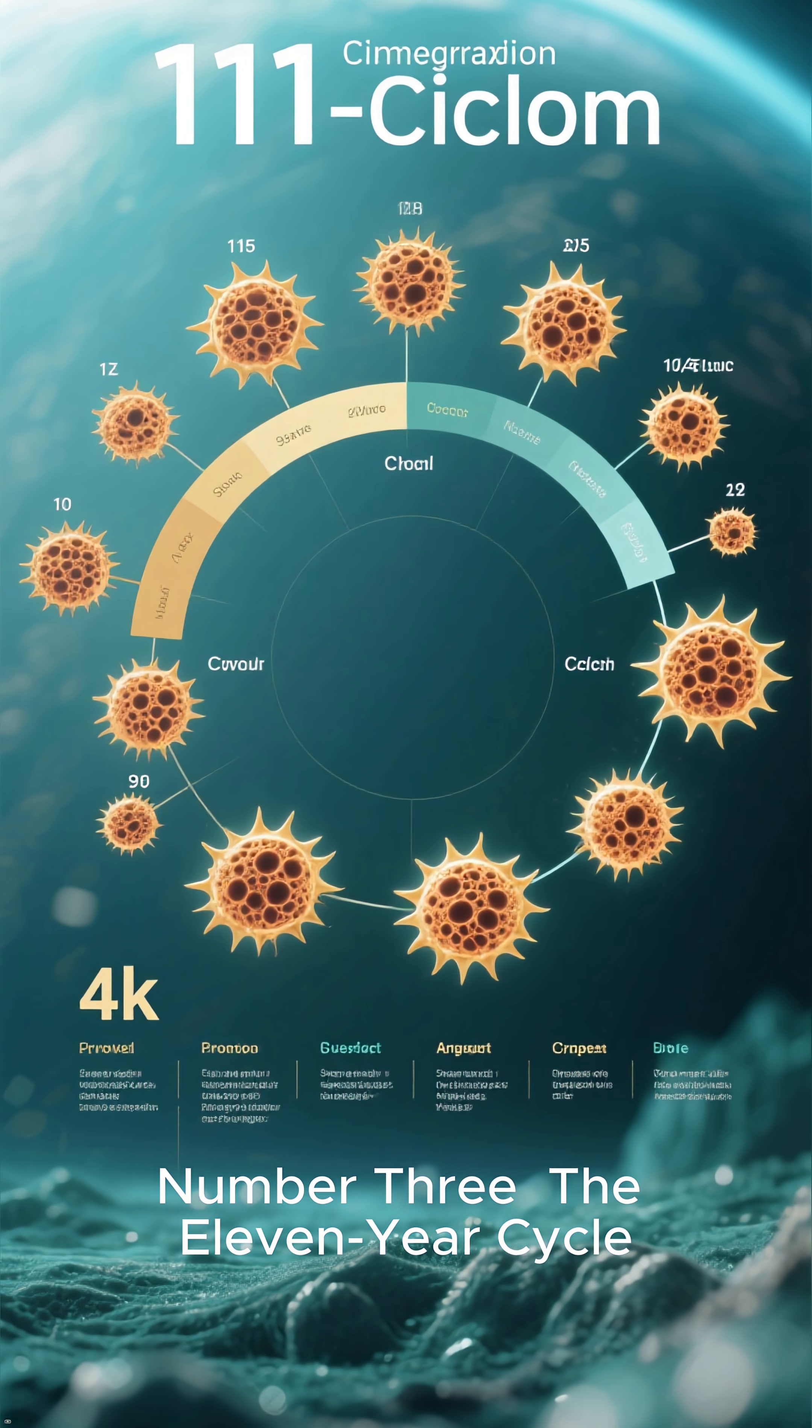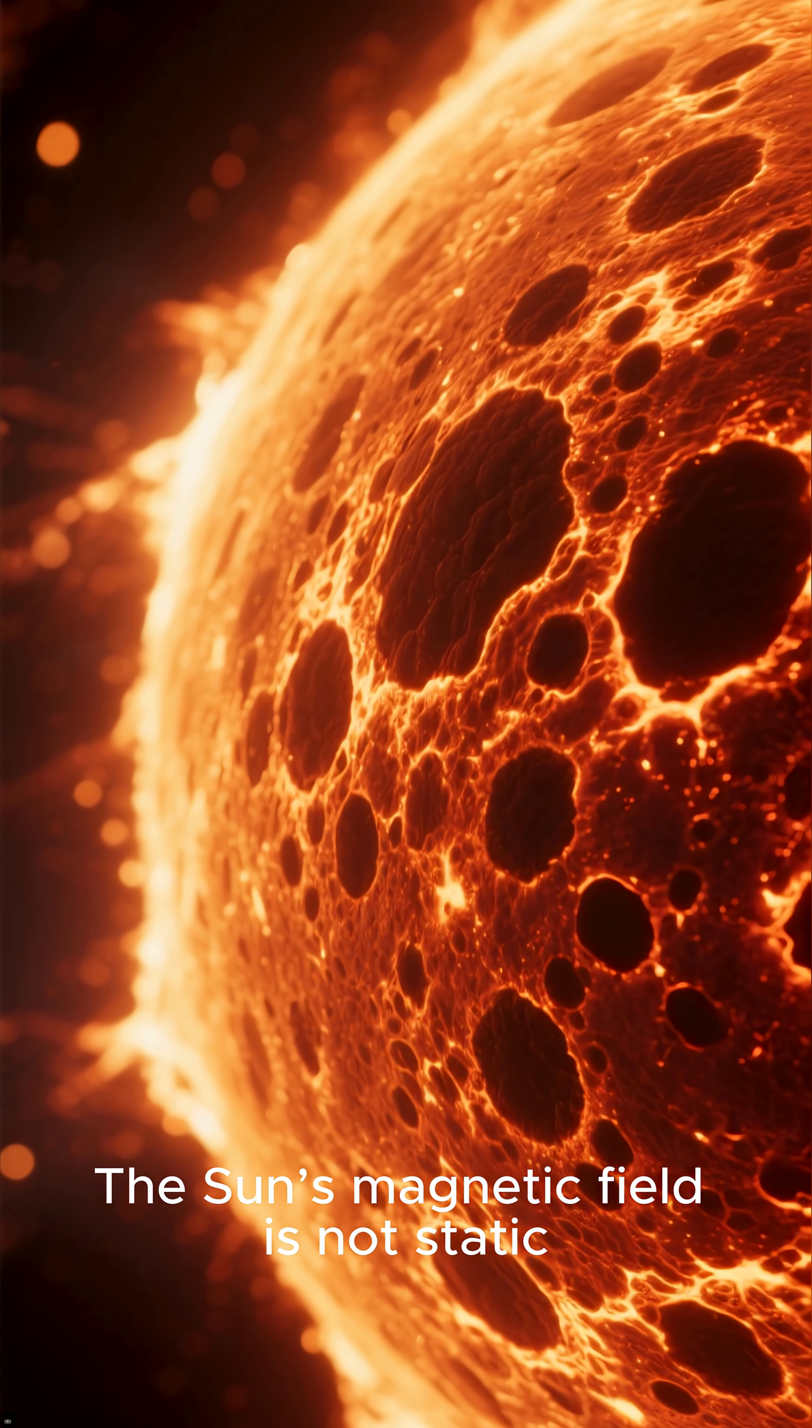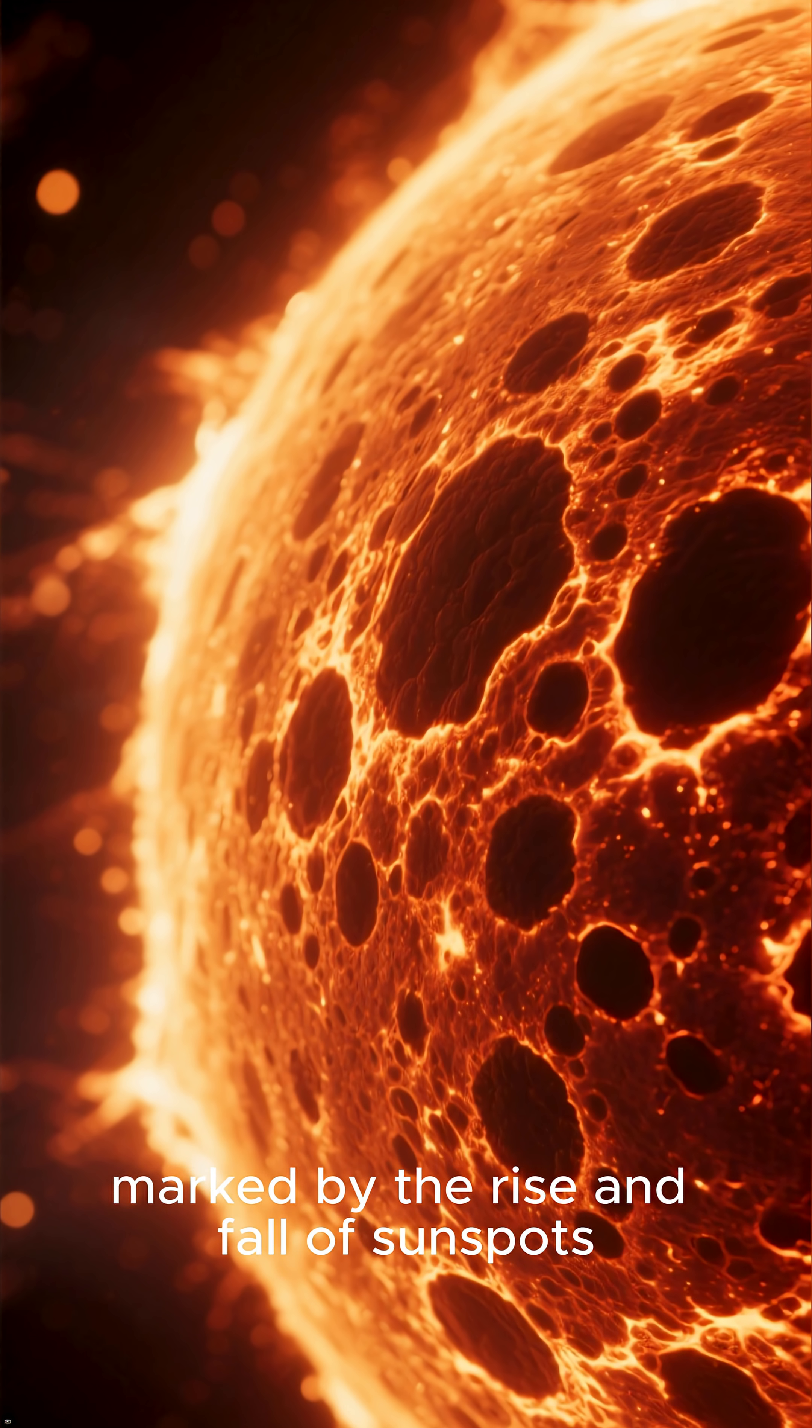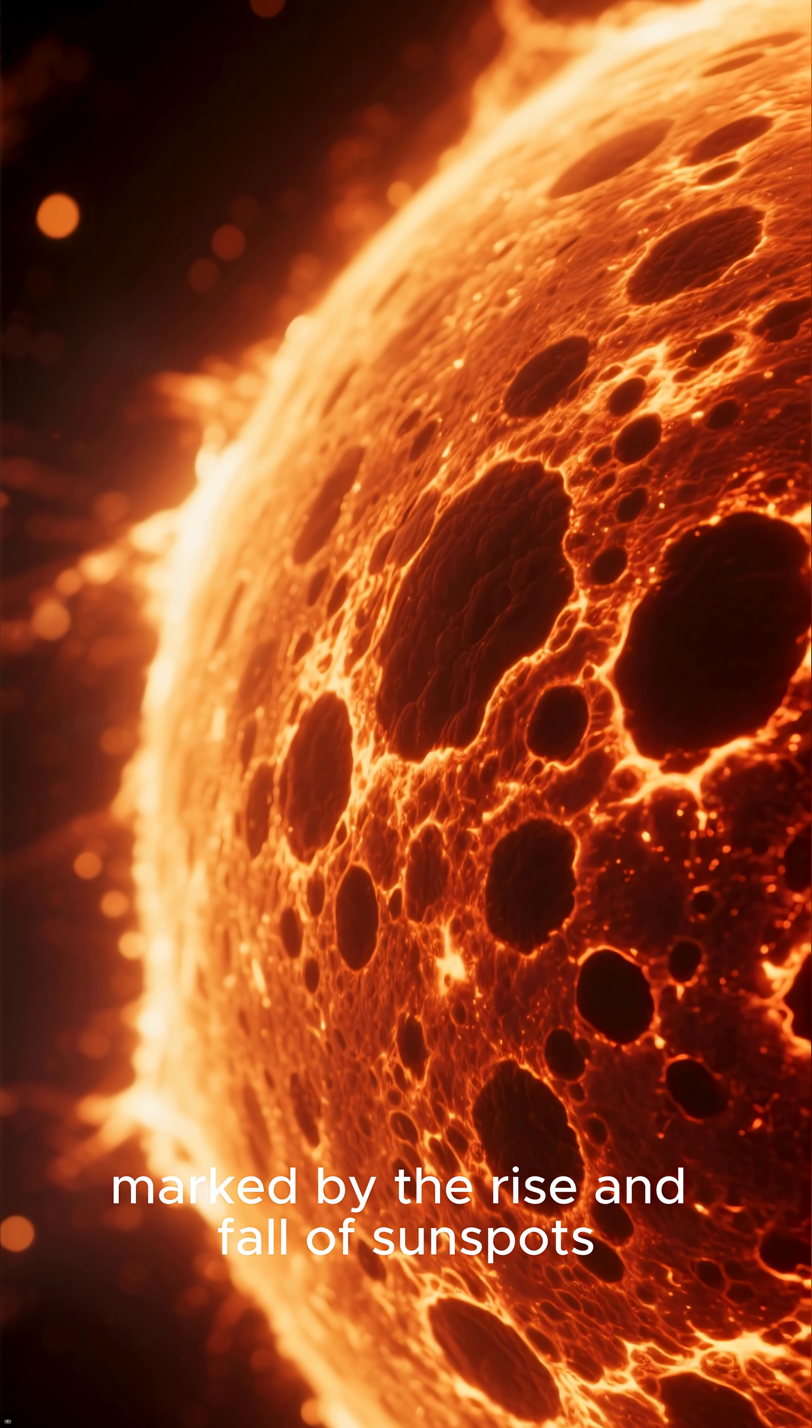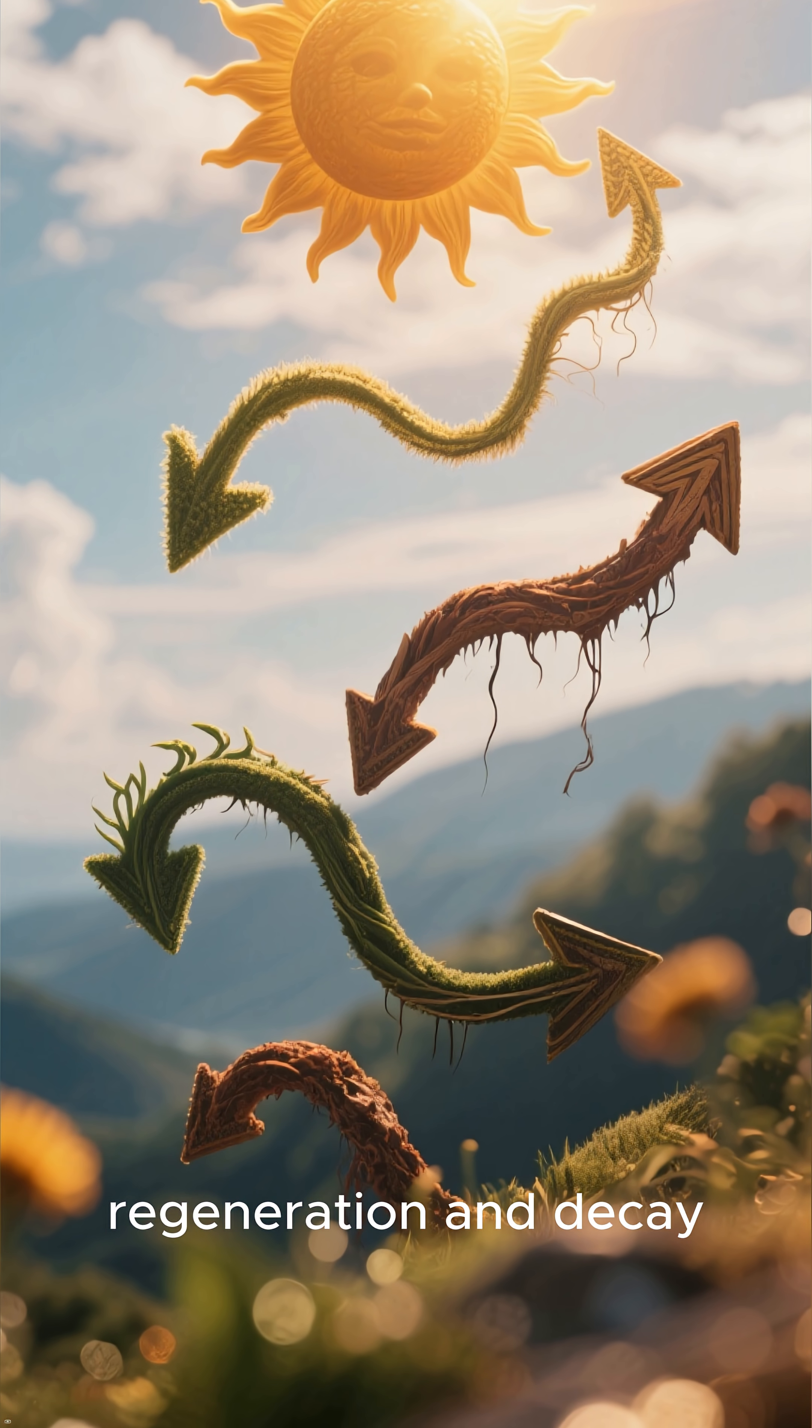Number 3: The 11-Year Cycle. The sun's magnetic field is not static. It operates on a grand, approximately 11-year cycle marked by the rise and fall of sunspots. We know that this cycle is a consequence of the magnetic field's regeneration and decay.